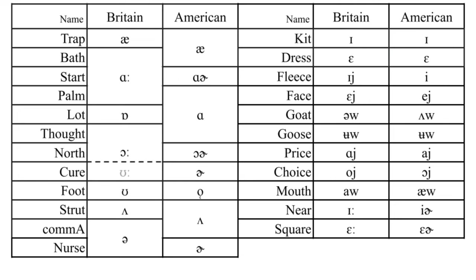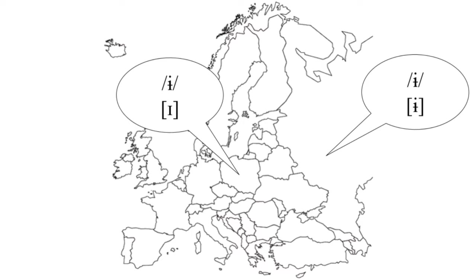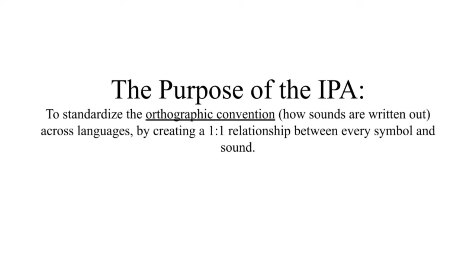We basically have the same thing in English — what we call vowel sets. Instead of coming up with a new set of vowel symbols for every accent, we can create a list of words and refer to any individual vowel based on which word it's pronounced like. This is a pretty neat system, and it allows us to make things more consistent cross-linguistically and across accents. It also has the side effect of completely ruining the entire purpose of the IPA!